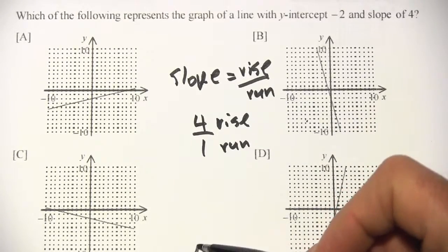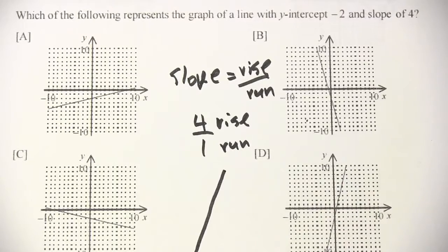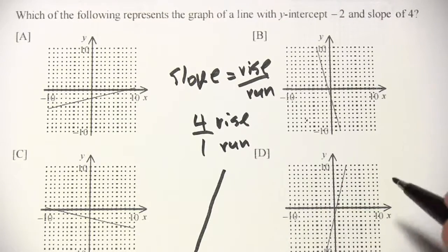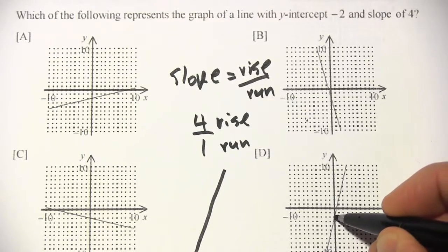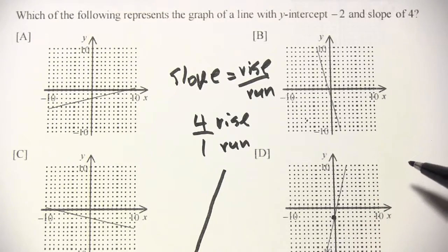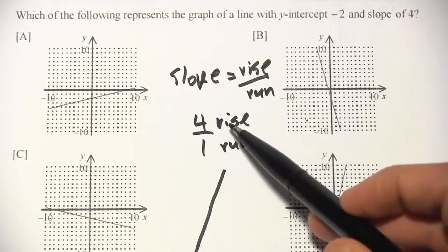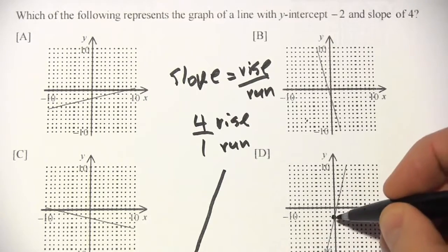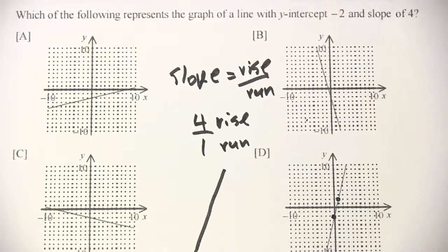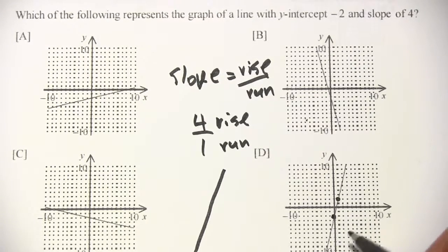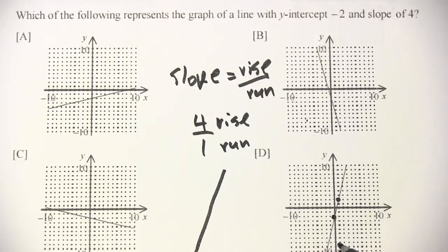That's going to give us a nice steep line like that. And if you're not sure about that, you can always count. So I think it's going to be d. Let's start at our y-intercept, which is negative 2, and we'll go up 4 and over 1 and see if we're still on the line. So 1, 2, 3, 4, and then over 1, and I'm still on the line. So this looks like it matches a slope of 4.